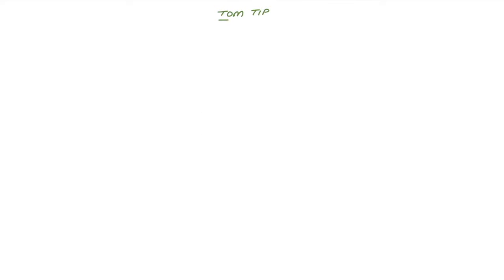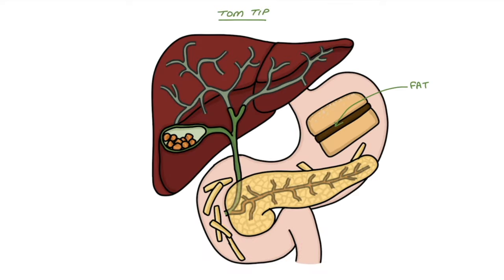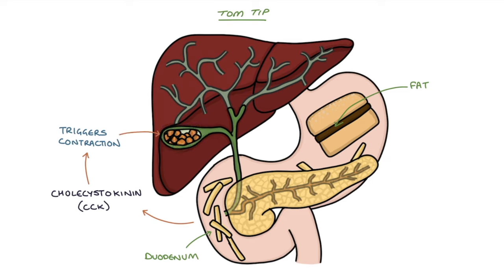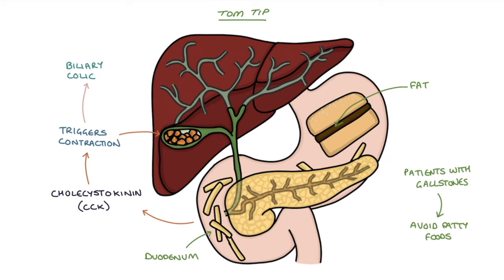A Tom tip for you: fat entering the digestive system causes a chemical called cholecystokinin, or CCK, to be secreted from the duodenum. Cholecystokinin triggers contraction of the gallbladder, which leads to biliary colic. Patients with gallstones and biliary colic are advised to avoid fatty foods to prevent CCK release and gallbladder contraction. Exam questions may test this mechanism, so it's worth remembering — particularly the link with cholecystokinin.